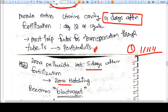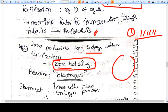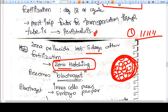One thing is very important: zona hatching. This morula stage and this blastocyst stage is happening inside the zona. But if they want to implant into the endometrium, they need to come out from this zona.